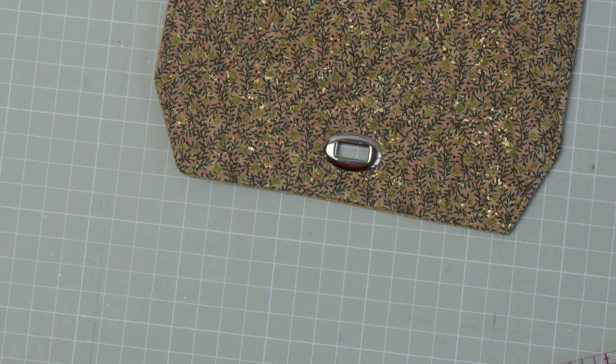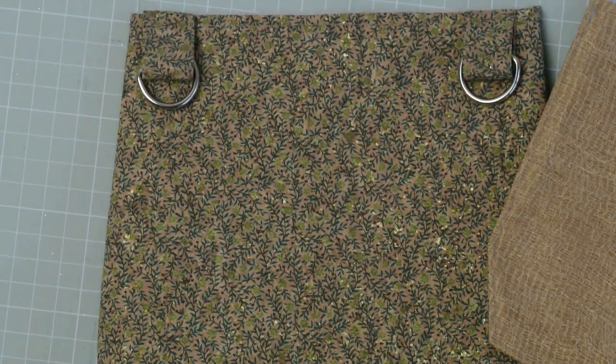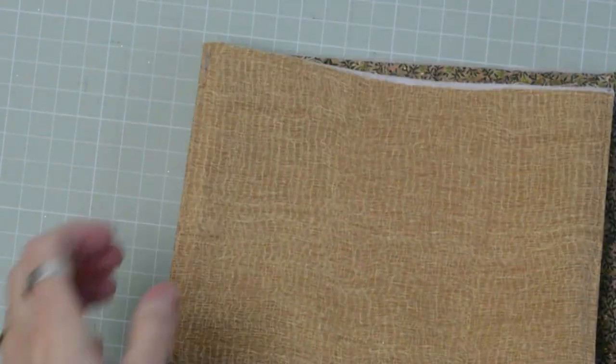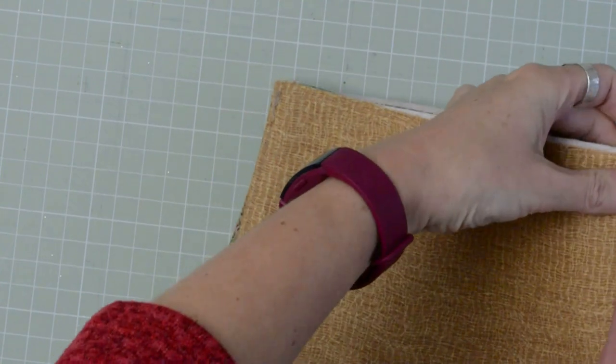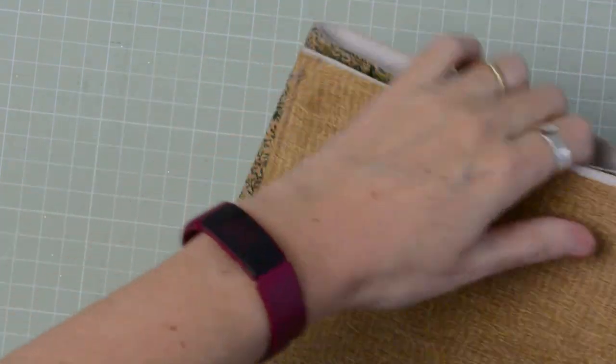So we're going to attach the closing flap to the main body of the bag. I'm just going to baste it in place from side seam to side seam and stitch in place.